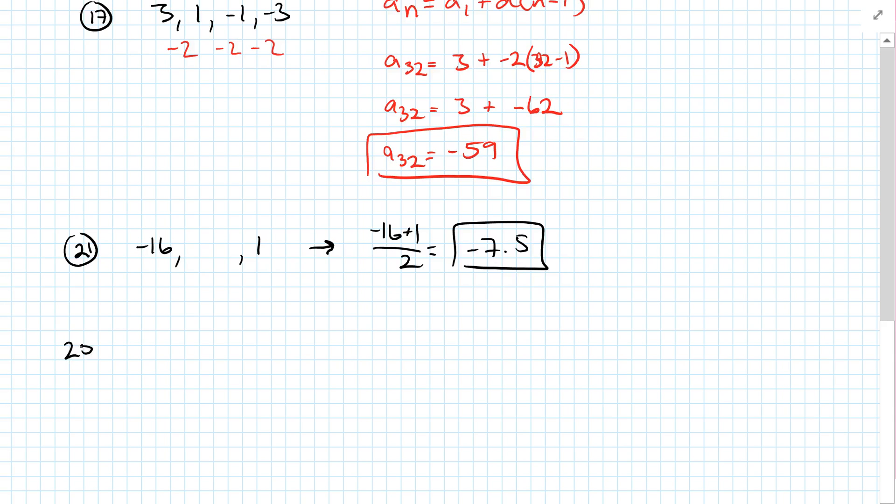23, 25. The two terms are 101 and negative 115. So we're going to add them together. So 101 plus negative 115 over 2 equals negative 14 over 2. It's going to be negative 7.